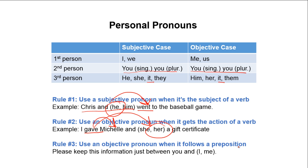Rule number three: use an objective pronoun when it follows a preposition. Some prepositions include to, on, over, at, between, with, in. If the pronoun comes after a preposition, it's got to be in the objective case. Example: 'Please keep this information just between you and I or me.' The preposition is between. Two pronouns follow it: you and either I or me. Since the pronoun follows a preposition, it must be objective — so we use 'me.' 'Please keep this information just between you and me.'